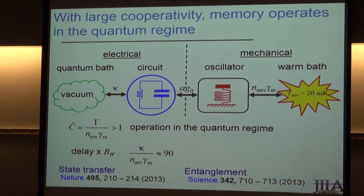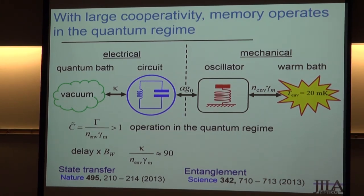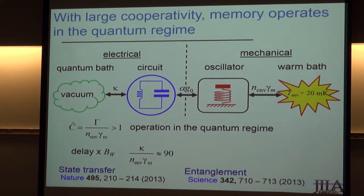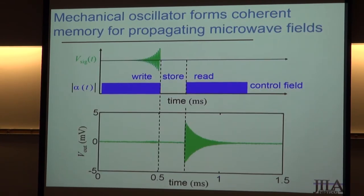The control field should not be impedance-matched in the sense of absorbing energy — think of it as a far-detuned microwave field that creates an oscillating voltage across the capacitor. You do need to find an optimal control field for each incoming pulse, and if you want to catch a particular temporal mode, you need to choose the control field to have exactly the right temporal envelope. In that sense, you would say it's impedance matched. The signal field is at the circuit's resonance frequency, while the control field is detuned from the electrical resonance by the mechanical oscillator's resonance frequency.